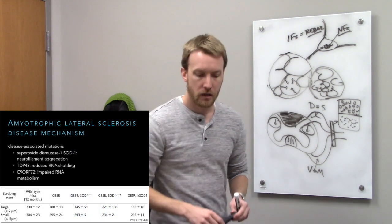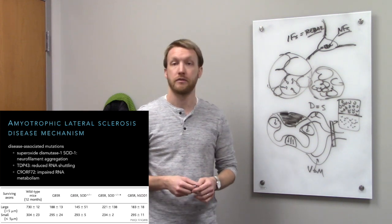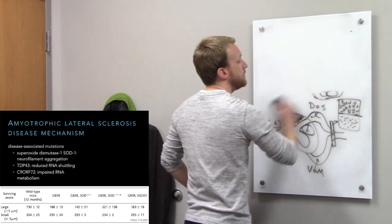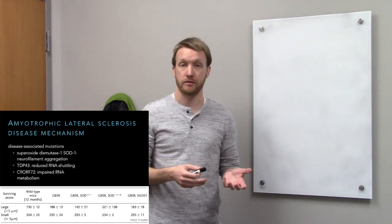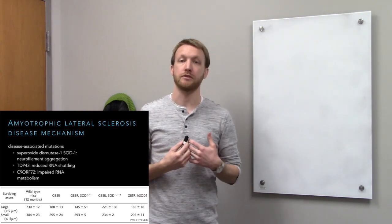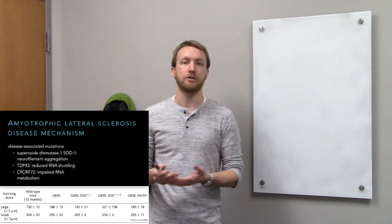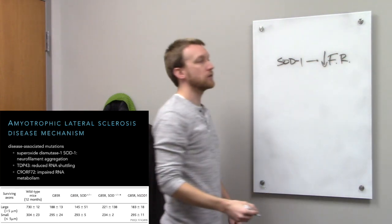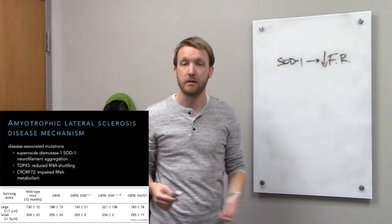The disease mechanism for ALS likely involves the inability to properly make proteins and get them where they need to be. The most common mutation found in ALS is in the gene for superoxide dismutase 1 (SOD1), an enzyme that helps break down free radicals by oxidizing them. An obvious mechanism is that these mutations impair SOD1 function, so free radicals build up and damage the cell. However, the data suggest this is not the case.